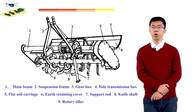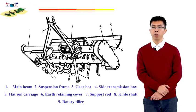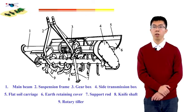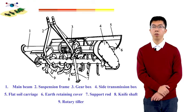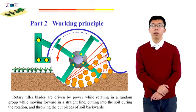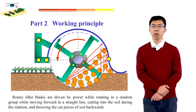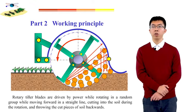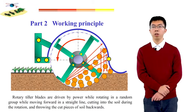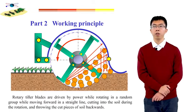The detailed structure of rotary tiller is shown on this slide. Number one is the main beam, number two is the suspension frame, number three is the gearbox, number four is the side transmission box, number five is the flat soil carriage, number six is the earth retaining cover, number seven is the support load, number eight is the knife shaft, and number nine is the rotary tiller blade. Rotary tiller blades are driven by the tractor's power while rotating, moving forward in a straight line, cutting into the soil during rotation, and throwing cut pieces of soil backwards. After hitting the retaining plate, they are further broken and fall to the surface, then the carriage levels the ground.